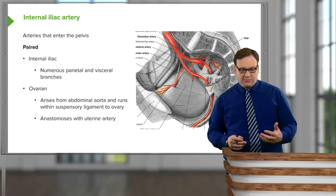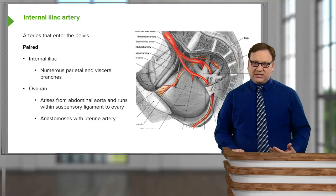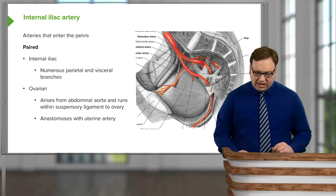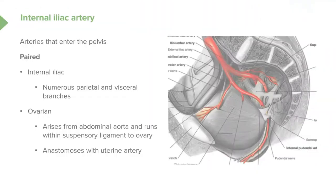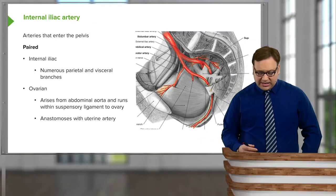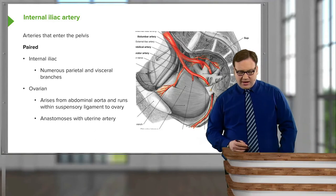It's important to remember that we have ovarian arteries, and these come from the aorta. Although the ovaries are located within the pelvis, these structures are not supplied by the internal iliac — they're supplied by the ovarian arteries, which run within the suspensory ligament and originate from the abdominal aorta. There may be some anastomosis with the uterine artery. These arteries tend to be paired, on both the left and right sides.